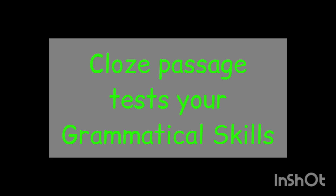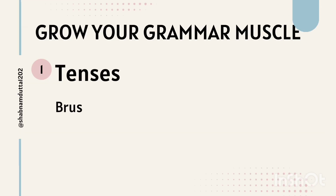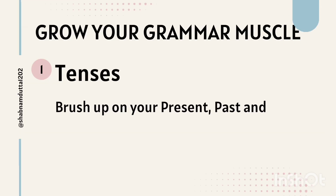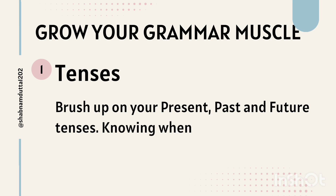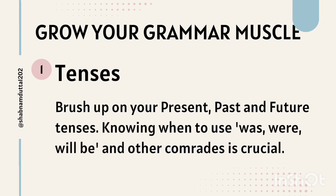Remember, cloze passages test your grammatical muscle. So first, let's give it a quick workout. Your first exercise is to brush up on your present, past and future tenses, because knowing when to use 'was', 'were' and 'will be' and their related forms is crucial.